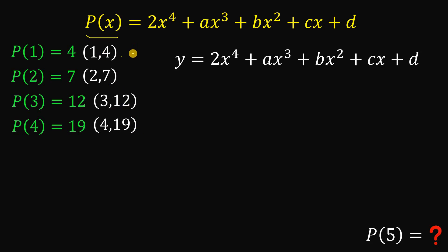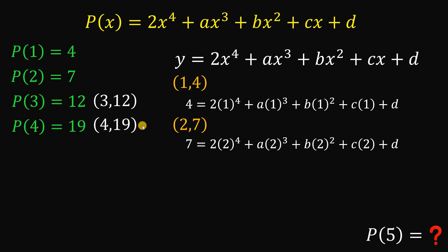Now we can use this point 1 comma 4. So when we plug in all x with 1 we get equal to 4. So I have an equation 4 equals 2 times 1 raised to the 4th power plus a times 1 cubed plus b times 1 squared plus c times 1 plus d. Also we will do the same thing to this point 2 comma 7 and we get this equation respectively.